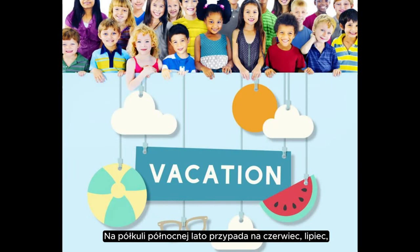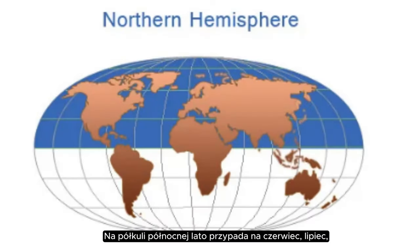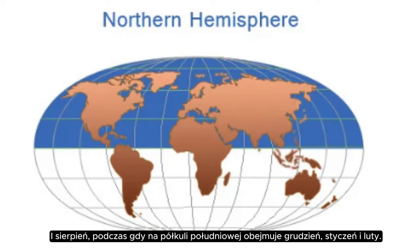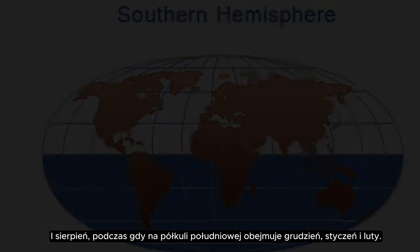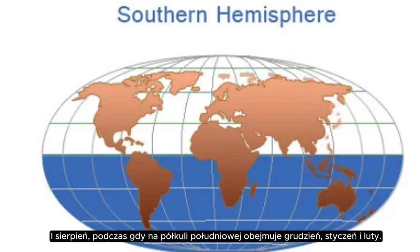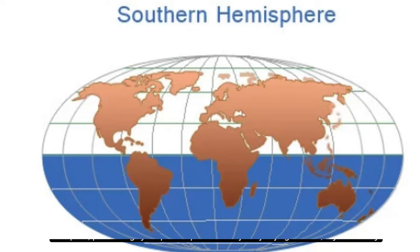In the Northern Hemisphere, summer occurs in June, July, and August, while in the Southern Hemisphere it spans December, January, and February.